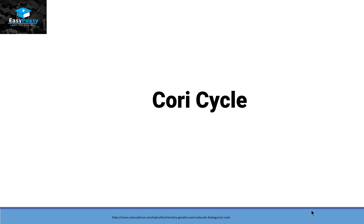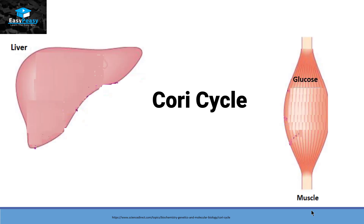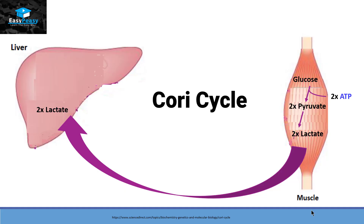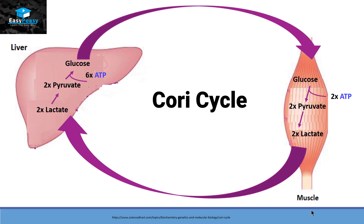Inside the Cori Cycle, glucose is used by muscle cells and converts itself into pyruvate, releasing two ATP molecules. This pyruvate converts itself into lactate, and this lactate goes to the liver. Inside the liver, lactate converts back into pyruvate, and this pyruvate converts back into glucose. The process of converting pyruvate into glucose takes 6 ATP molecules, and then this glucose can go back to the muscle cell. This cycle is called the Cori Cycle.